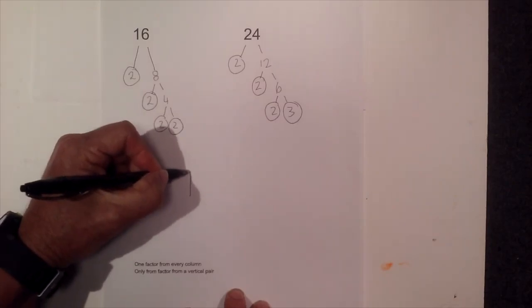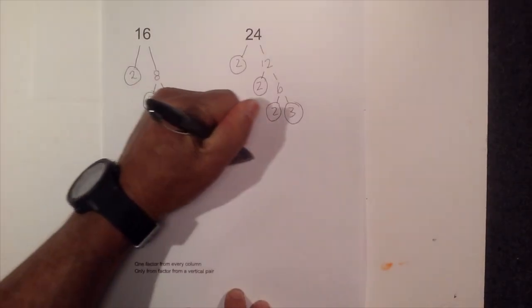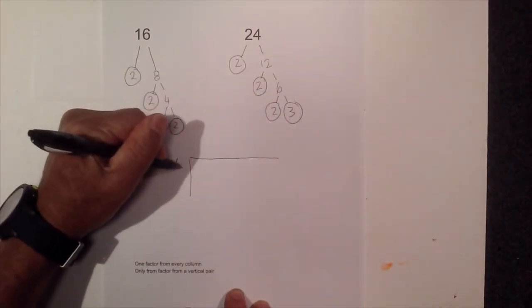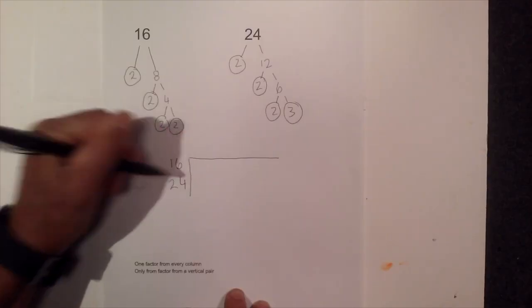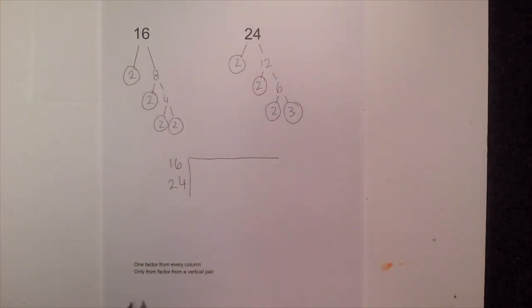Now remember I am going to do my prime factorization chart. 16 and 24 and I am going to follow these two rules. It is one factor from every column. Only one factor from a vertical pair.